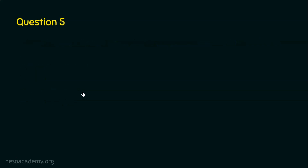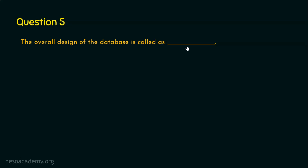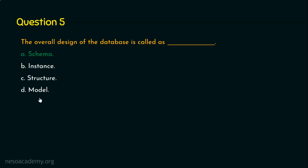We are done with question number four. Let's now move on to question number five: the overall design of the database is called as what? The options are: option A, schema; option B, instance; option C, structure; and option D, model. The right answer is option A, schema, because schema is referred to as the overall design of the database. And we have three levels of schema: the physical schema, the logical schema, and the subschema. We are done with question number five.